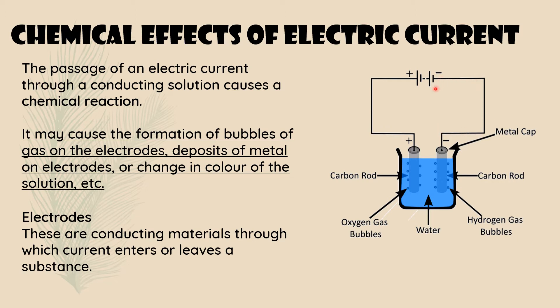We connect the carbon rods to a battery, and in the beaker we pour water. Water is a poor conductor, so when you add a little acid, salt, or lemon juice and stir well, it conducts electricity much better. So just pour some lemon juice or add some salt, stir it well, and that water will conduct electricity. Our setup is now ready.